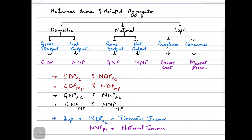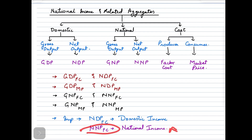These are the eight major aggregates we need to remember. Out of these eight, two are especially important with specific names. NDP at factor cost is also called the domestic income of a country, and NNP — net national product at factor cost — is called the national income of a country. So if your question focuses on domestic income, remember it is NDP at factor cost, and if it asks about national income, remember it is NNP at factor cost.